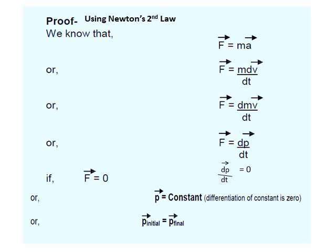If p is constant, means initial momentum is equal to final momentum. Hence, in the absence of any external force, the total linear momentum of the system is constant. And this is the law of conservation of linear momentum.